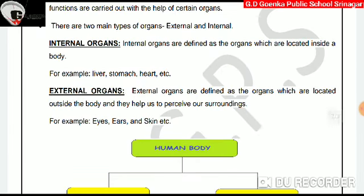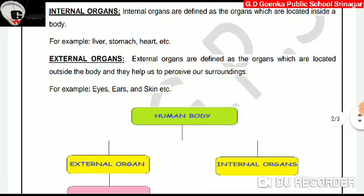And external organs are defined as the organs which are located outside the body. They help us to perceive our surroundings. For example, eyes, ears, and skin, etc.